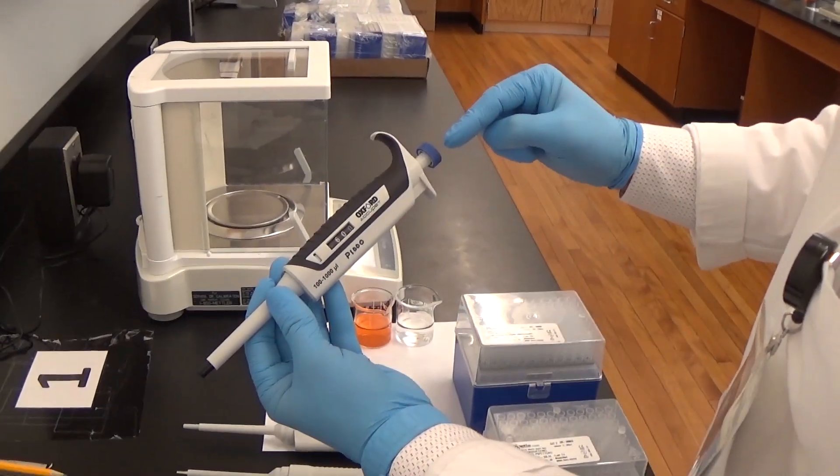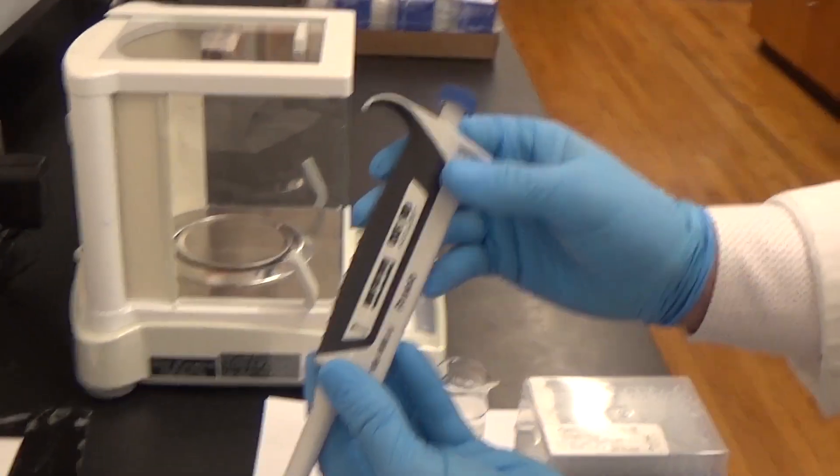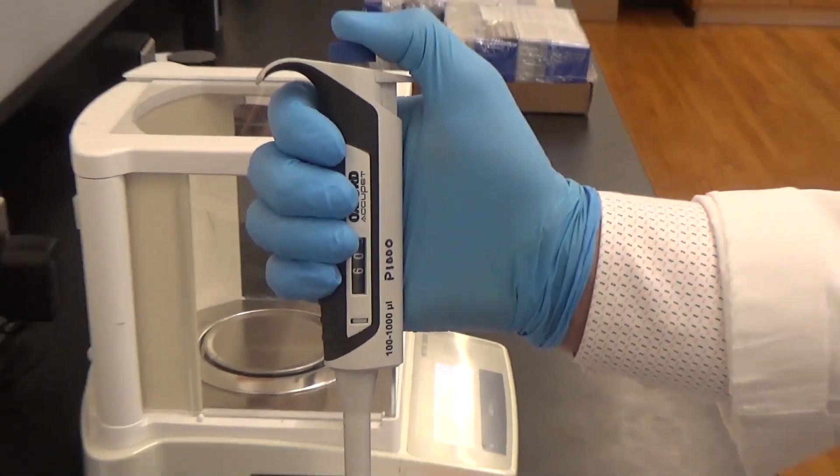The most important part is the plunger button. You need to set the desired volume by turning the plunger button and also you have to use this button to draw and dispense the liquid.